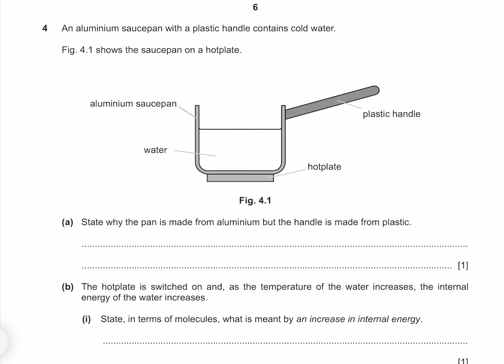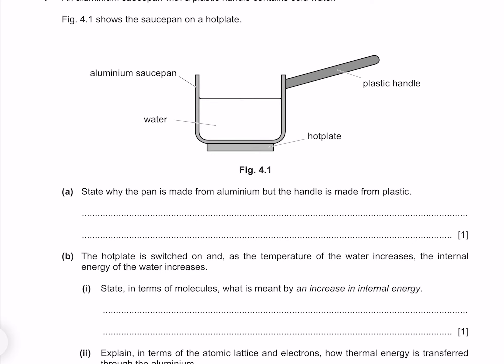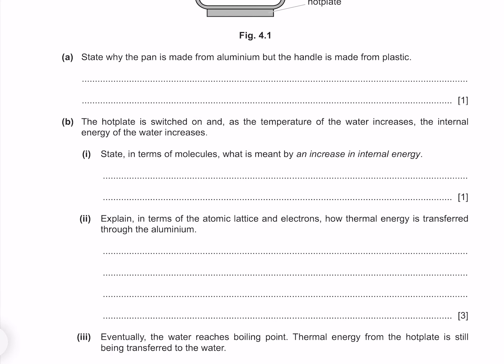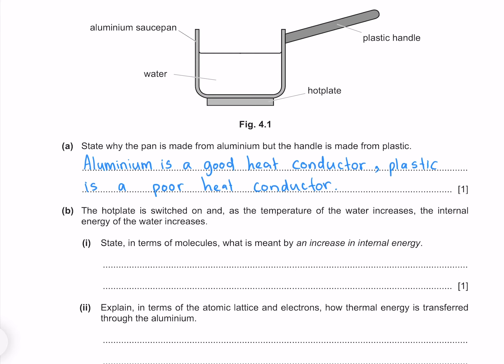An aluminium saucepan with a plastic handle contains cold water, sitting on a hot plate. State why the pan is made from aluminium but the handle is made from plastic. Aluminium is a good heat conductor — we want the saucepan to transfer energy from the hot plate to the water. Plastic is a poor heat conductor, which protects our hands from the heat.